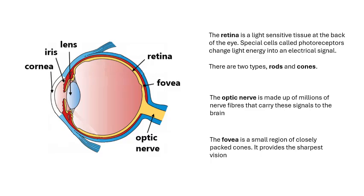The retina is a light-sensitive tissue at the back of the eye with lots of special cells called photoreceptors that change light energy into an electrical signal. There are two types which are called rods and cones. The optic nerve is made of all the nerve fibers from all of the cells coming together, with millions of nerve fibers going to the brain through the optic nerve.